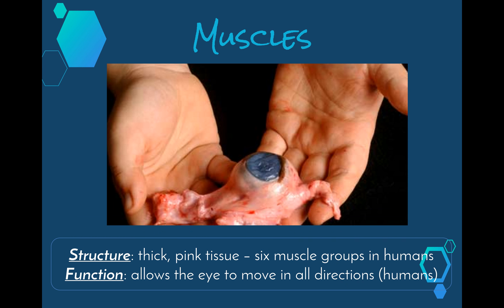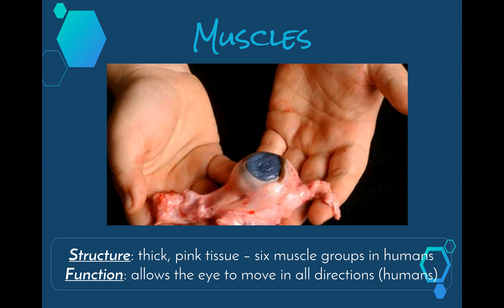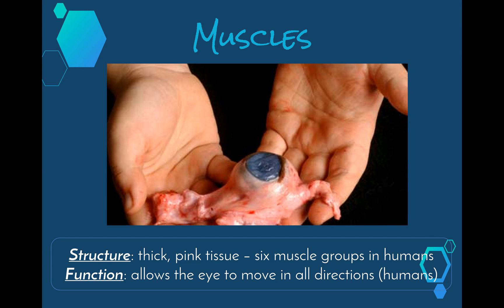That brings us to our muscles — those lovely pink thick tissues. Humans have six muscle groups attaching to our sclera that help us move our eyes in a whole range of different directions, and if you're talented enough, move them in different directions at the same time. The function obviously helps us to move the eyes in all directions.